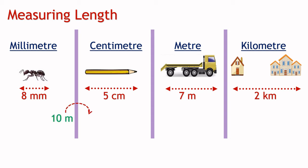Remember, 10 millimeters is equal to 1 centimeter. 100 centimeters is equal to 1 meter. And 1,000 meters is equal to 1 kilometer.